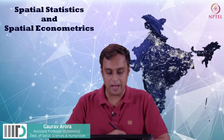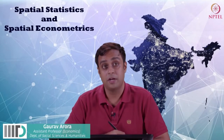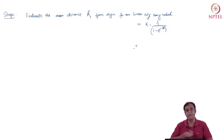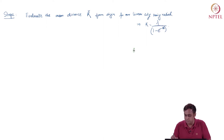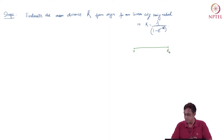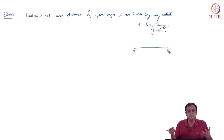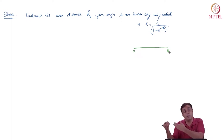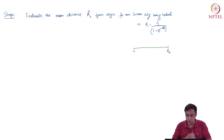We have the task of evaluating the mean distance r̄ for a given probability distribution. The interpretation is that there is a linear city starting at the origin, going out to a finite radius capital R. We want to understand the mean distance at which a location marker will be found going out from the origin.